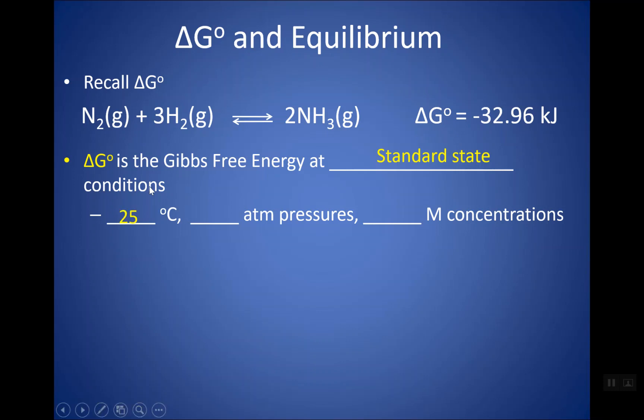Standard state is 25 degrees Celsius, which is room temperature, one atmosphere pressure. So if you're calculating partial pressures with gases, you're using one ATM for your partial pressures, or one molar concentration.